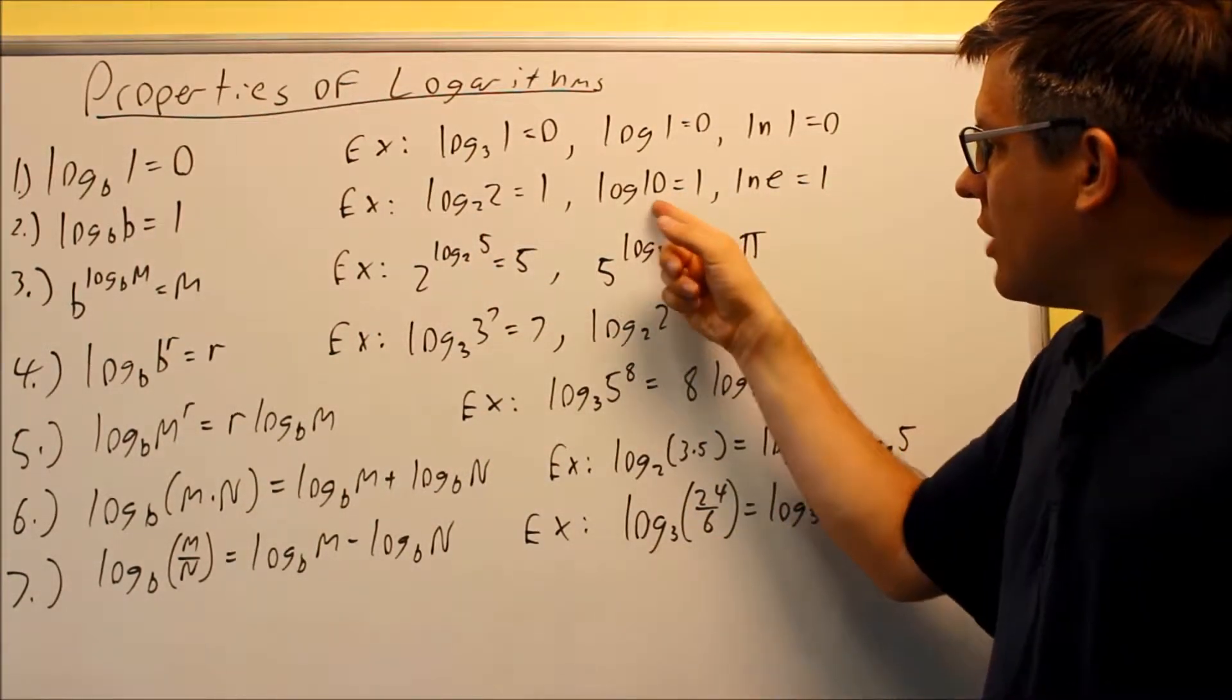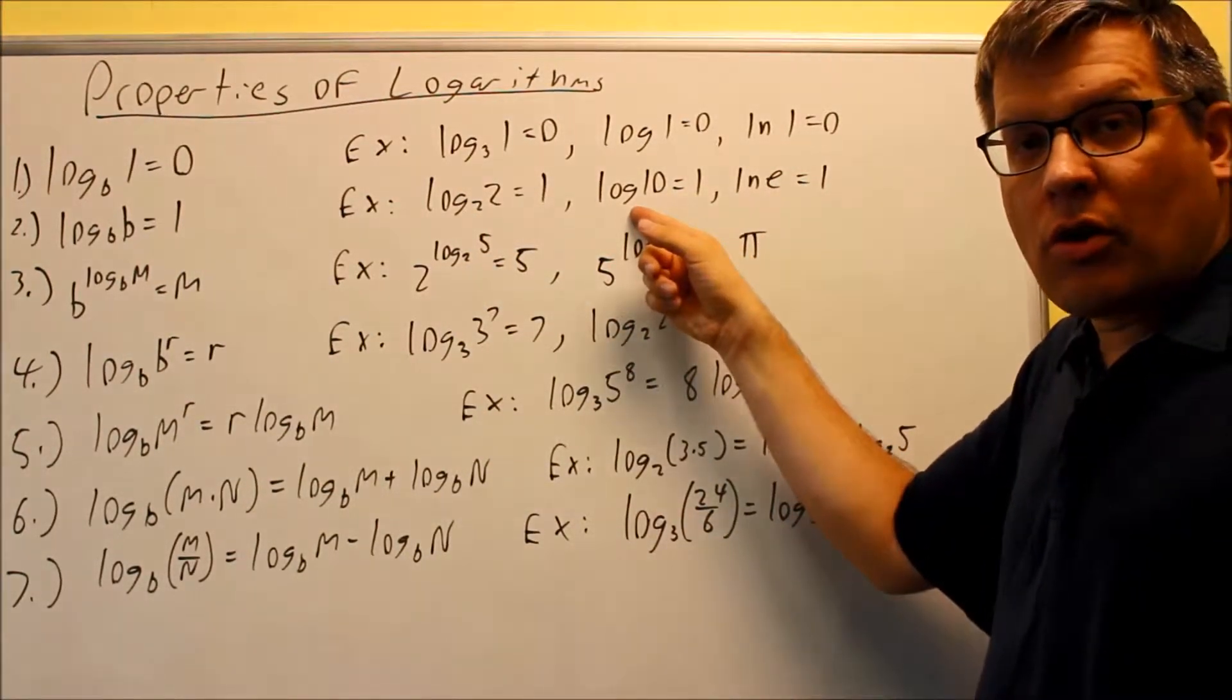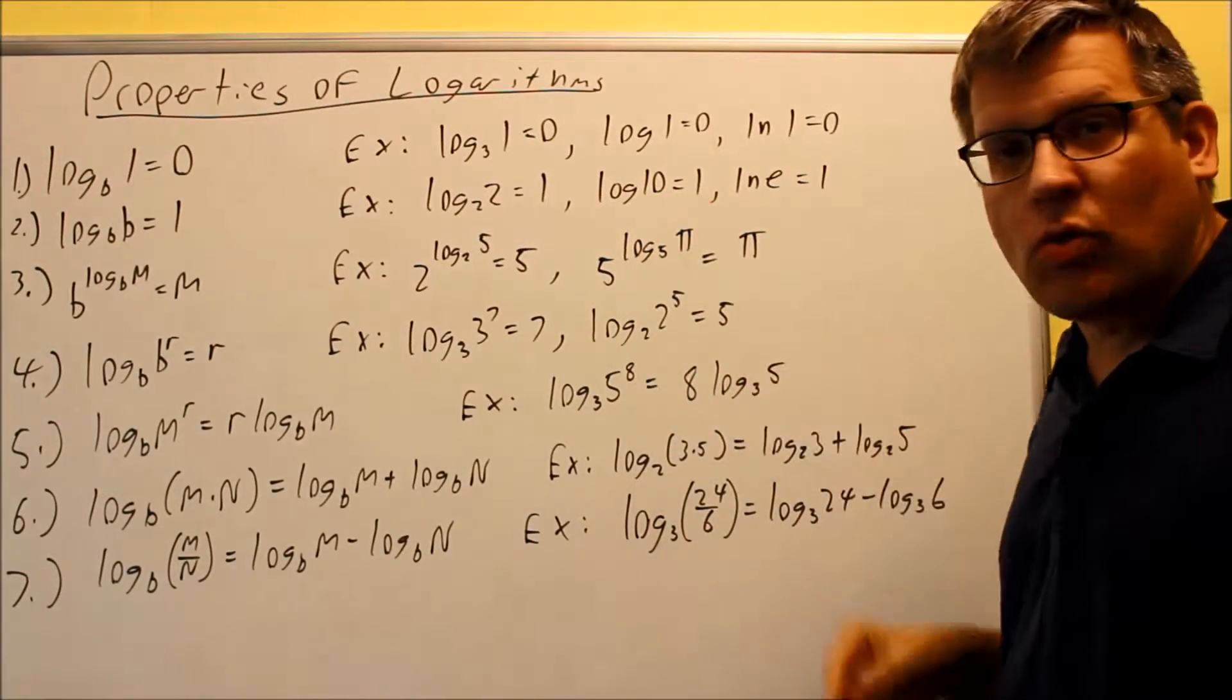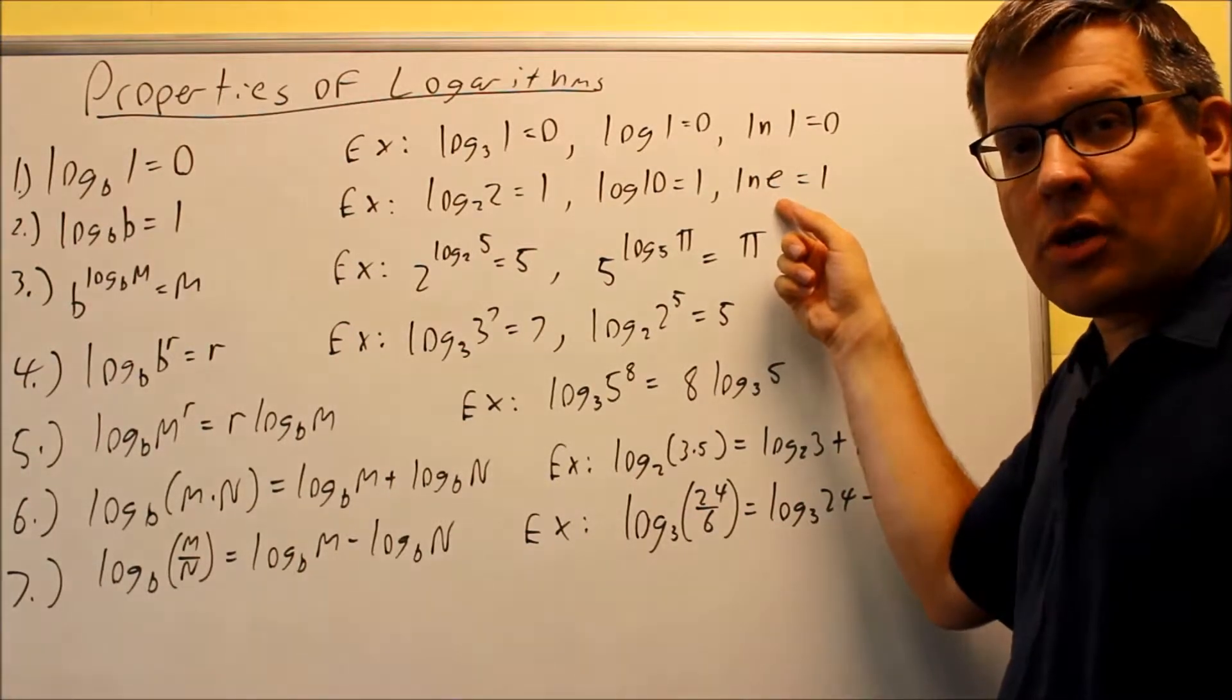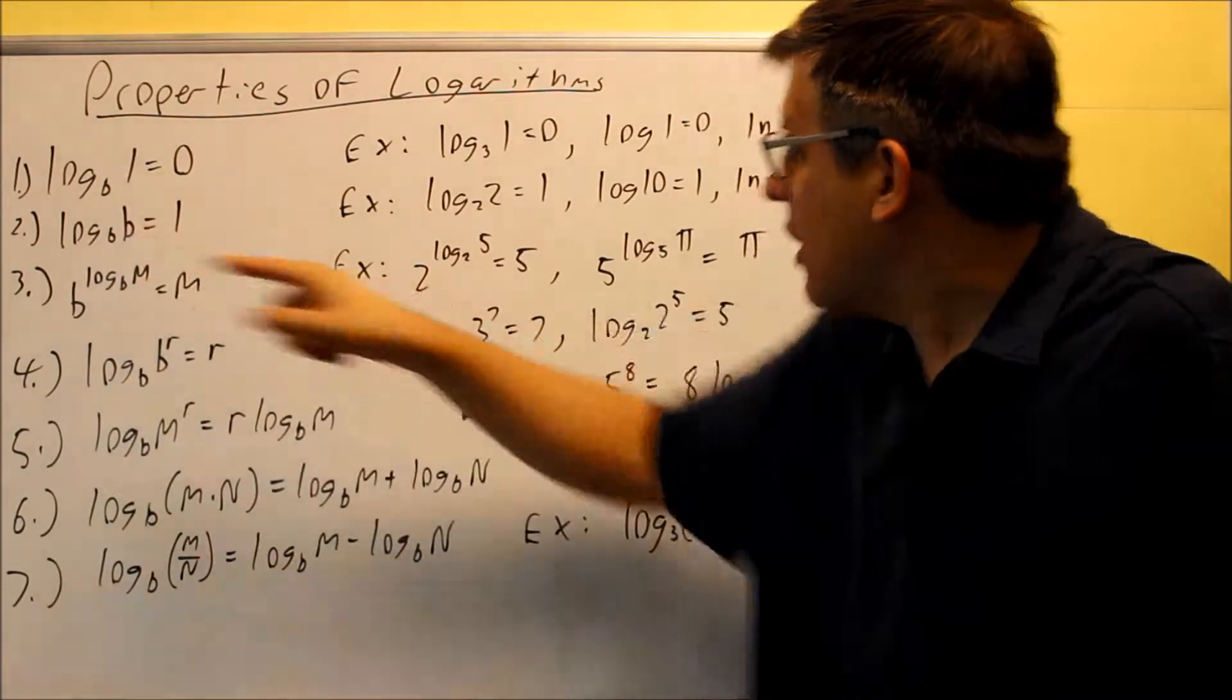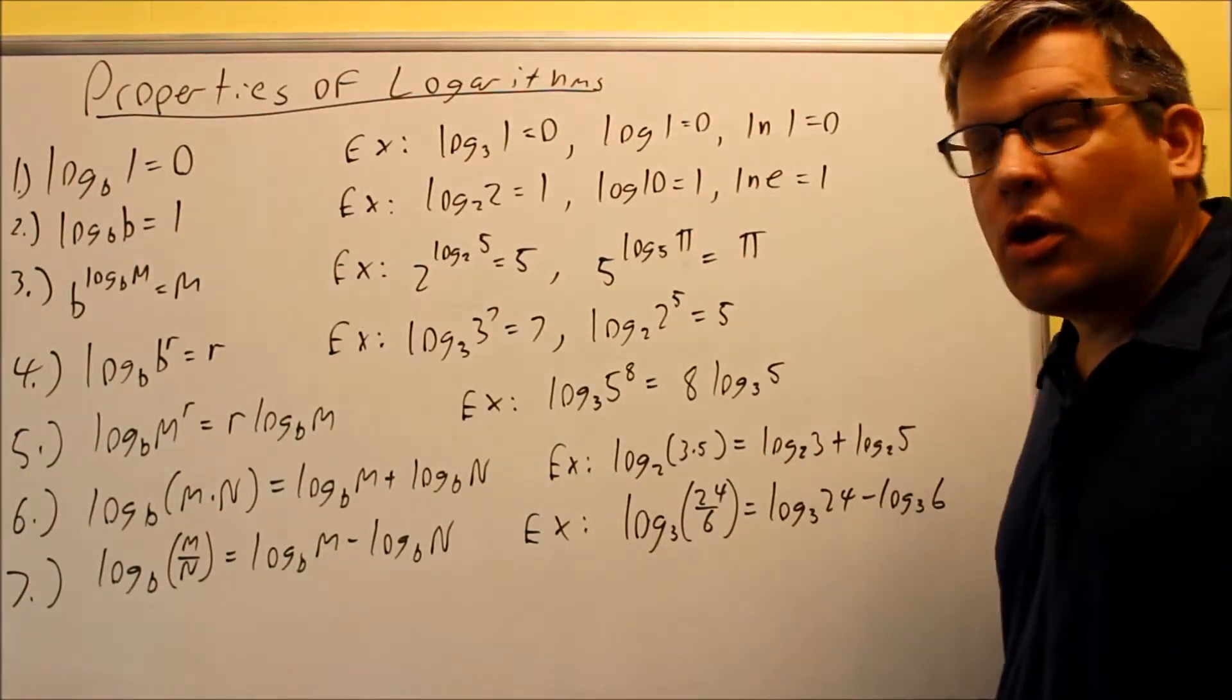Likewise, a log with no number has a base of 10, so log base 10 of 10 equals 1. And ln e would be the same because you have log base e of e. These two numbers match, so that's also equal to 1.